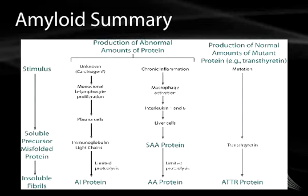In summary, there are various routes that can lead to amyloid being deposited in different parts of the body. Various stimuli — some unknown, though possibly related to carcinogens — lead to beta lymphocyte proliferation. This leads to the creation of plasma cells that produce immunoglobulin light chains. With limited or incorrect proteolysis of these light chains, amyloid protein is deposited in the body. This is what we term primary amyloidosis.